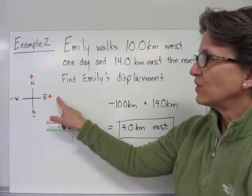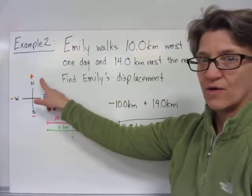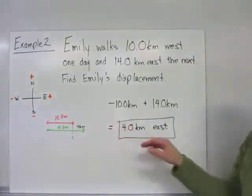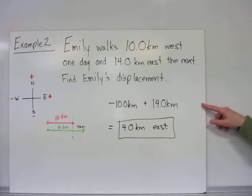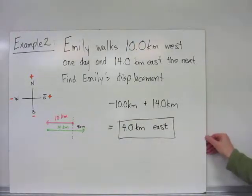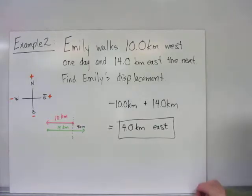Mathematically, we usually use east and north as positive values, west and south as negative values. So adding these vectors, I have negative 10 kilometers plus 14 kilometers will give us a net displacement of 4 kilometers to the east.